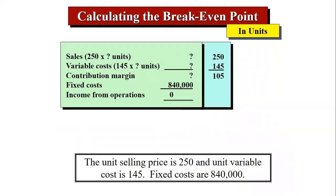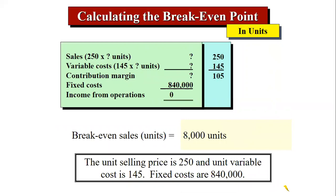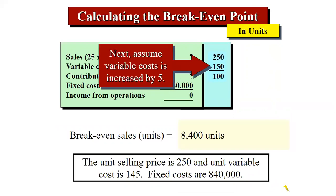Here is another example: fixed cost of 840,000 divided by contribution margin of 105 gives a break-even of 8,000 units. Now if variable cost increases by 5 — from 145 to 150 — then 250 minus 150 gives a contribution margin of 100. Recalculating: 840,000 divided by 100 equals 8,400 units as the new break-even.